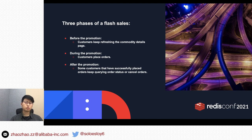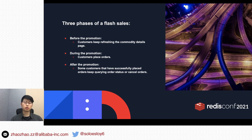Flash sales can be divided into three phases. First, before the promotion, customers keep refreshing the commodity details page, and the number of requests will spike quickly. During the promotion, customers place orders and the order requests reach their peak. After the promotion, some customers keep checking order status and may cancel orders, while others keep querying commodity pages in case someone cancels.